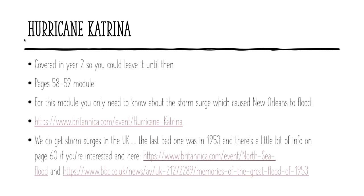This last case study you don't have to do in year one — you could leave it until year two where we cover hurricanes. We are going to cover storm surges next week. There is a particular kind of flooding that happens when the sea comes onto the land, which is not ideal. Hurricane Katrina is probably the most famous storm surge in living memory because it made New Orleans fill up like a basin. It doesn't need to be a huge case study. There's one hyperlink and some stuff in the module, so you could do a short version this year and add to it next year, or leave it entirely until year two.